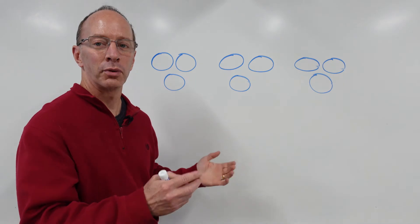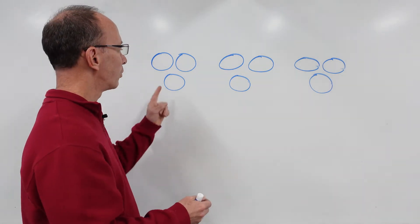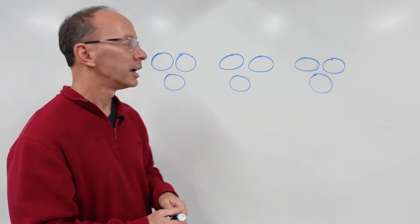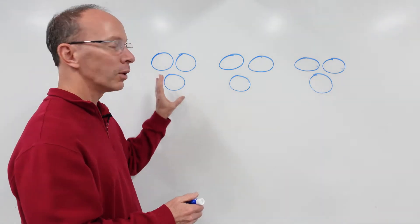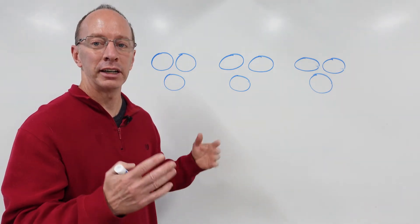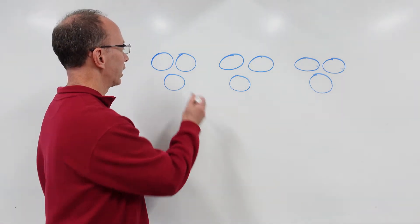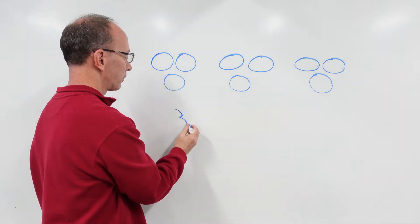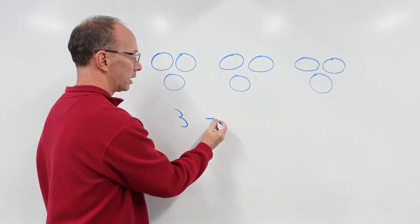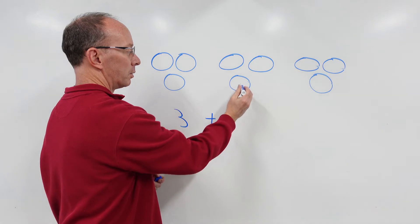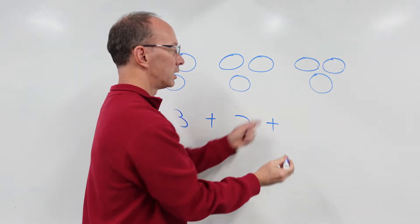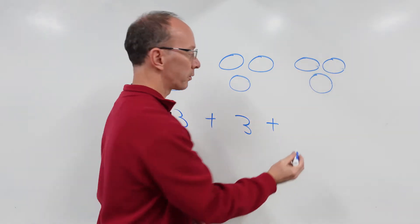Let's get started with our first problem. We have one, two, three groups, and what I want to do is count how many are in each group. I have one, two, three here, plus another group of three, plus another group of three.